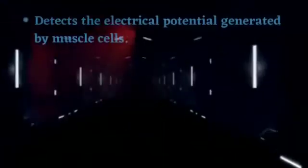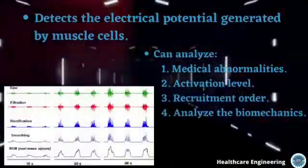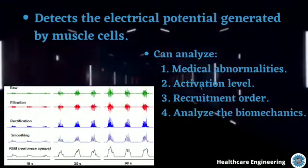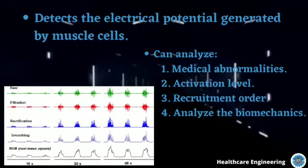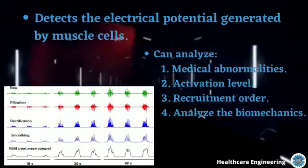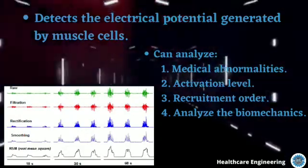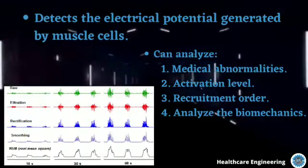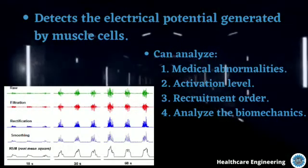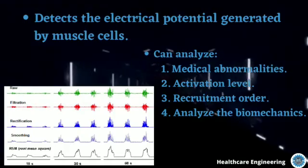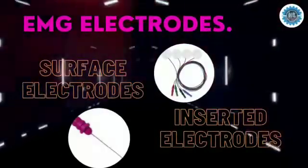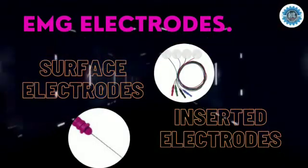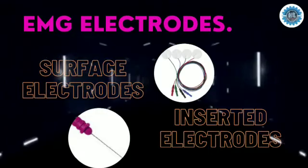An electromyograph detects the electric potential generated by muscle cells when these cells are electrically or neurologically activated. The signals can be analyzed to detect medical abnormalities, activation level, or recruitment order, or to analyze the biomechanics of human or animal movement. The bio-electrical activity inside the muscle of a human body is detected with the help of EMG electrodes.